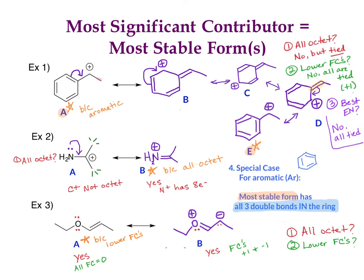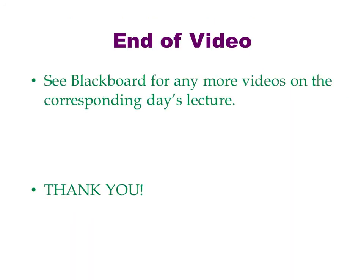A and E are tied, so both get a star — there's no rule saying only one can be most stable. If all forms are completely tied across all four rules, you can star all of them. With that, we've covered all the major topics in resonance — that's pretty much what you need to know for this course. We'll go into more detail in class with different examples. Try those activities as soon as you can, and please ask questions whenever you have them. Thanks, bye.